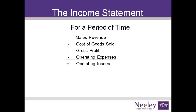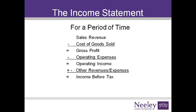Operating income is the result of transactions with customers. Other revenues and expenses, such as interest or gains and losses, are considered to get income before tax. Tax expense is subtracted to get net income. Net income is the earnings for a period of time. This statement reports the earnings from the activity during the period.